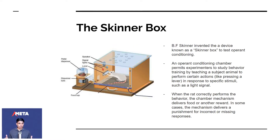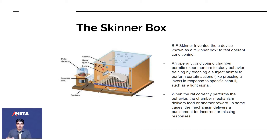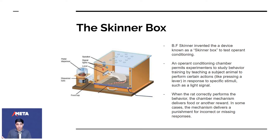Here's an example of pattern recognition called the Skinner box experiment. B.F. Skinner, an amazing psychologist and scientist, invented a box to test operant conditioning — an operant conditioning chamber that permits experimenters to study behavior and training by teaching a subject animal to perform certain actions. Inside the box there's a small lever: every time the animal presses the lever, food is delivered. When the rat correctly performs the behavior, the chamber delivers food. In some cases, it delivers a punishment for incorrect or missing responses. The rat eventually realizes it has to press the lever to get food, and anything else will cause problems.